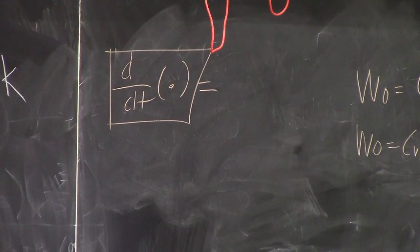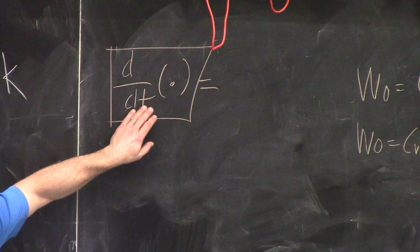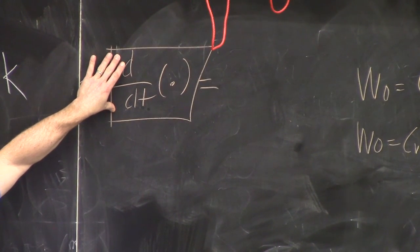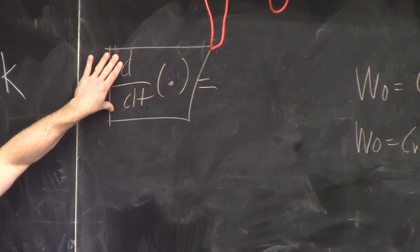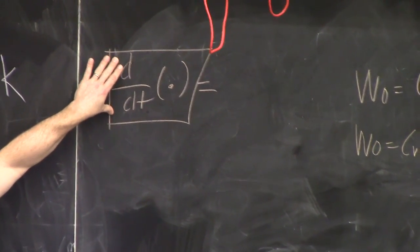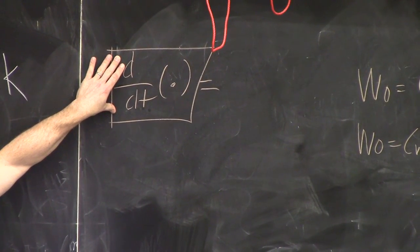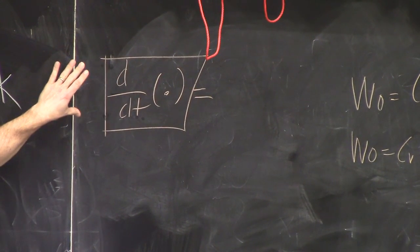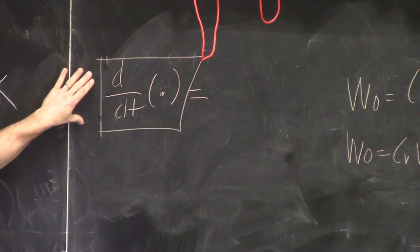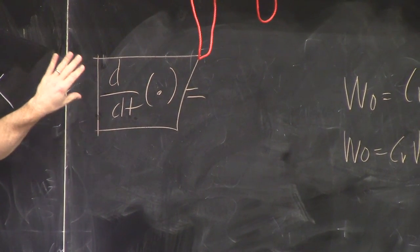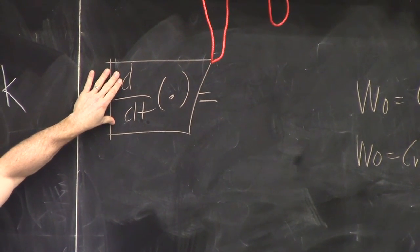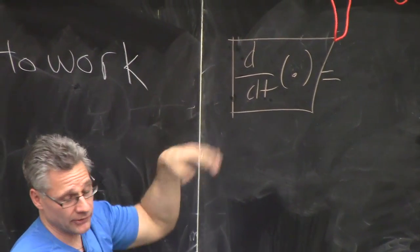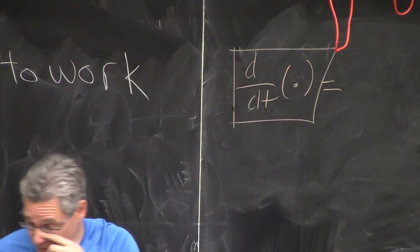When you account for accumulation, you get derivatives with time. You write d/dt of the thing you're accumulating. You know what derivatives are — you just haven't seen differential equations before. When you include the accumulation term, you take d/dt of the thing that is accumulating: mass, energy, momentum, whatever it is. In this case, it's mass.